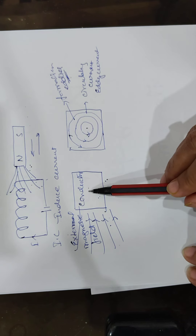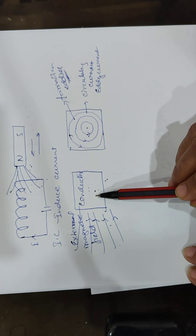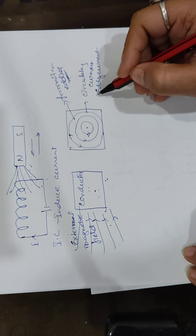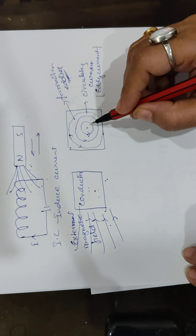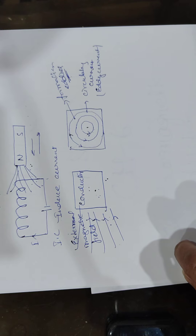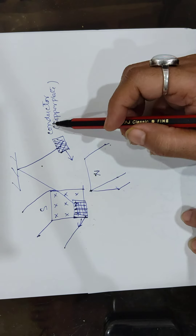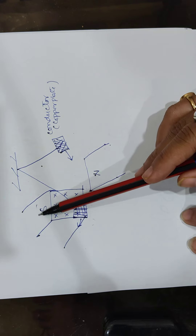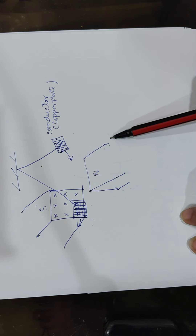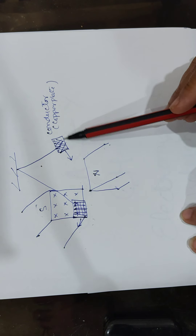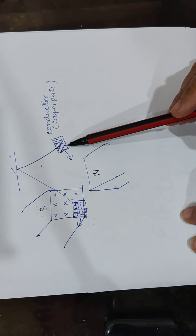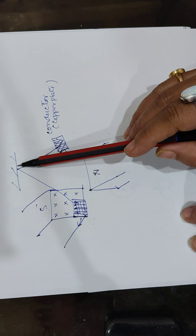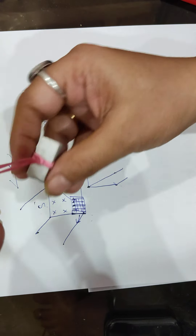Whenever a conductor is inserted into an external magnetic field, the electrons start revolving in a circular path, producing circular currents called eddy currents. Now let us assume this is a block with a south pole and north pole — a magnet — and here is our conductor. We have taken a copper plate placed between two magnets fixed in position.